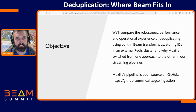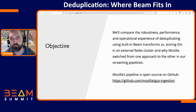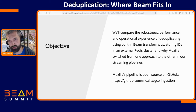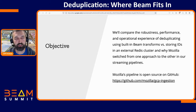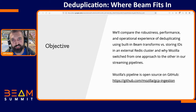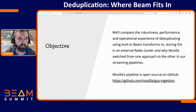The objective of this talk is to compare robustness, performance, and operational experience of deduplicating using stuff built into Beam transforms versus going external and storing IDs in something like Redis — and why Mozilla switched from one approach to the other, which may not be in the direction you're expecting. Our pipeline is open source on GitHub; the Mozilla GCP ingestion repository is a lot of what I'll be talking about today.